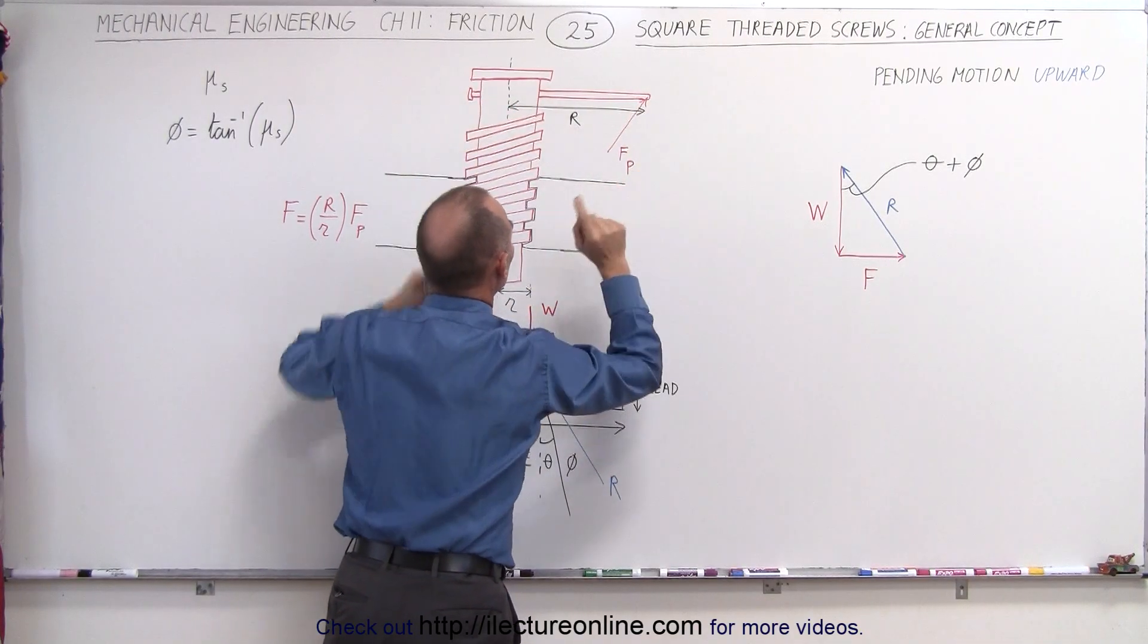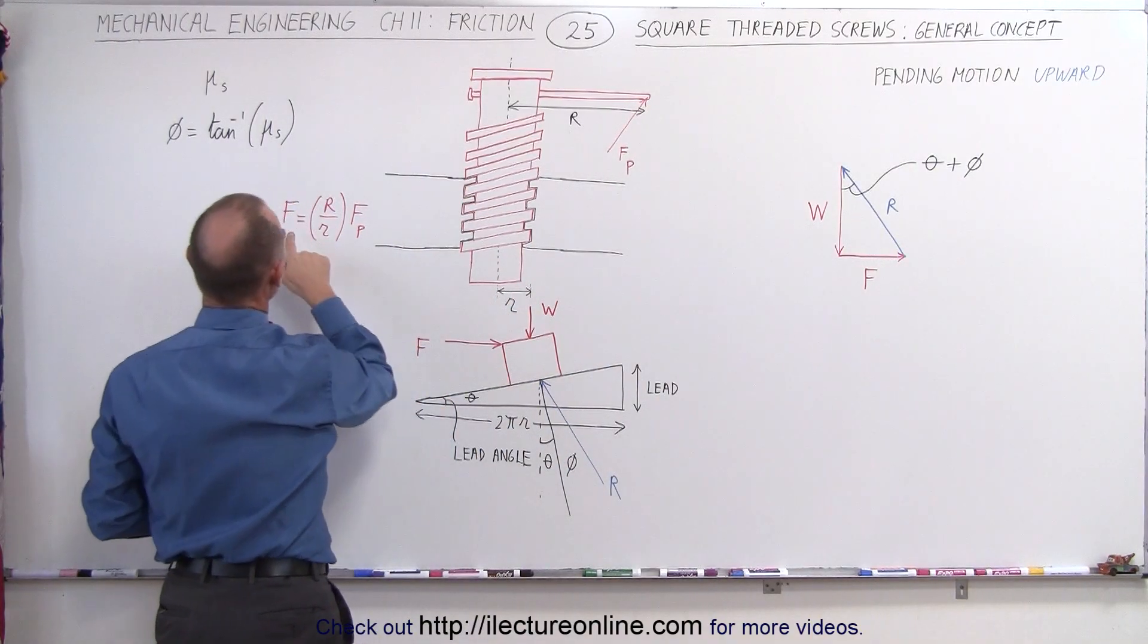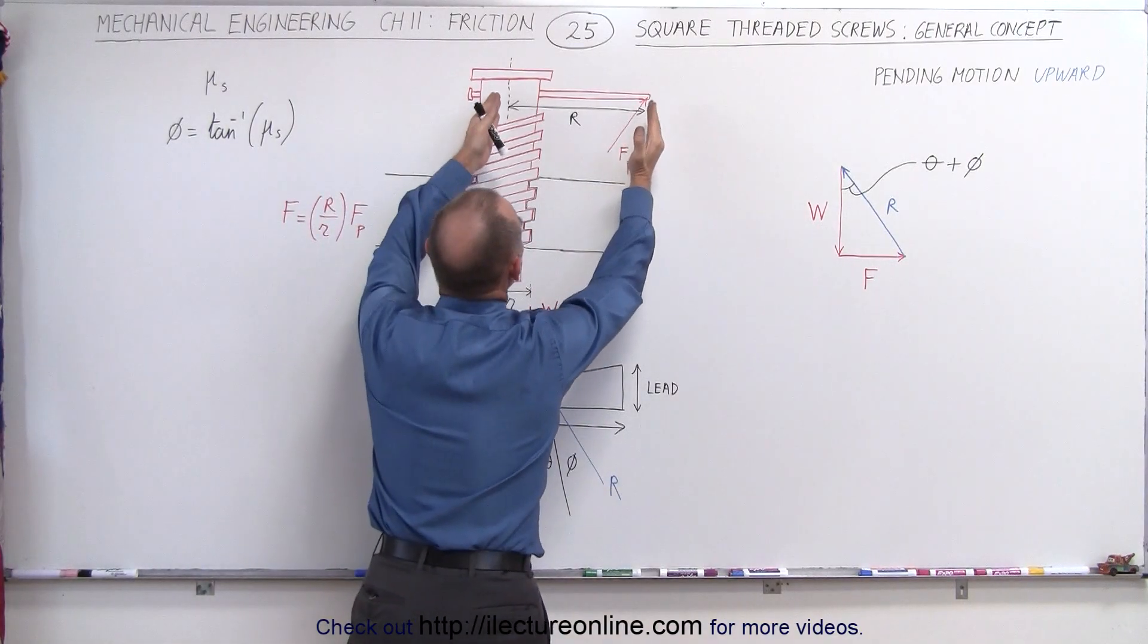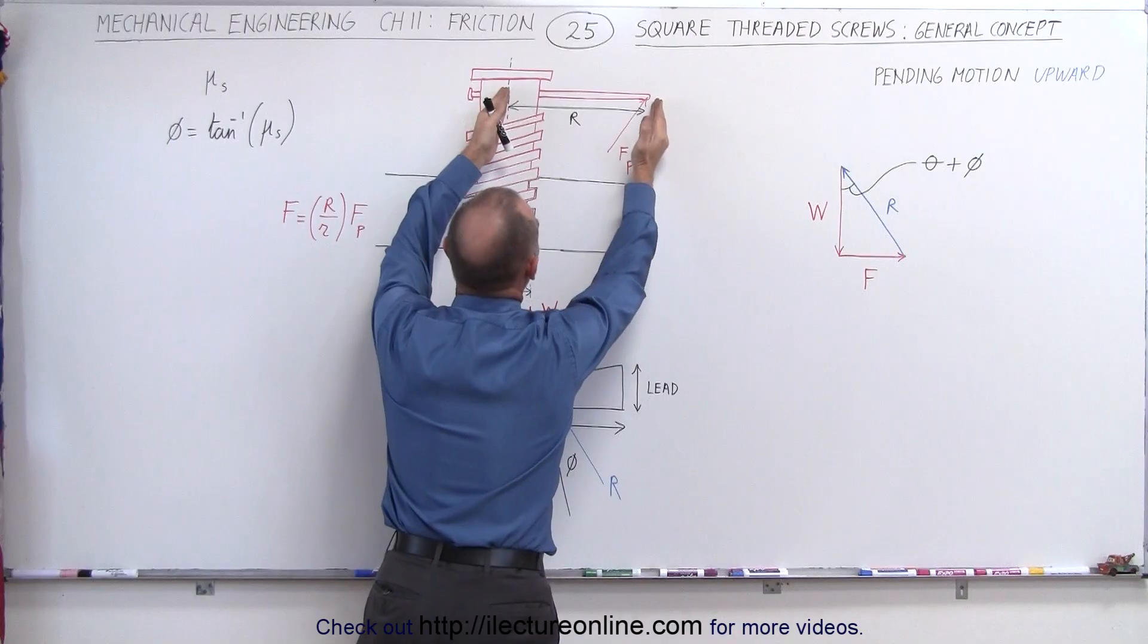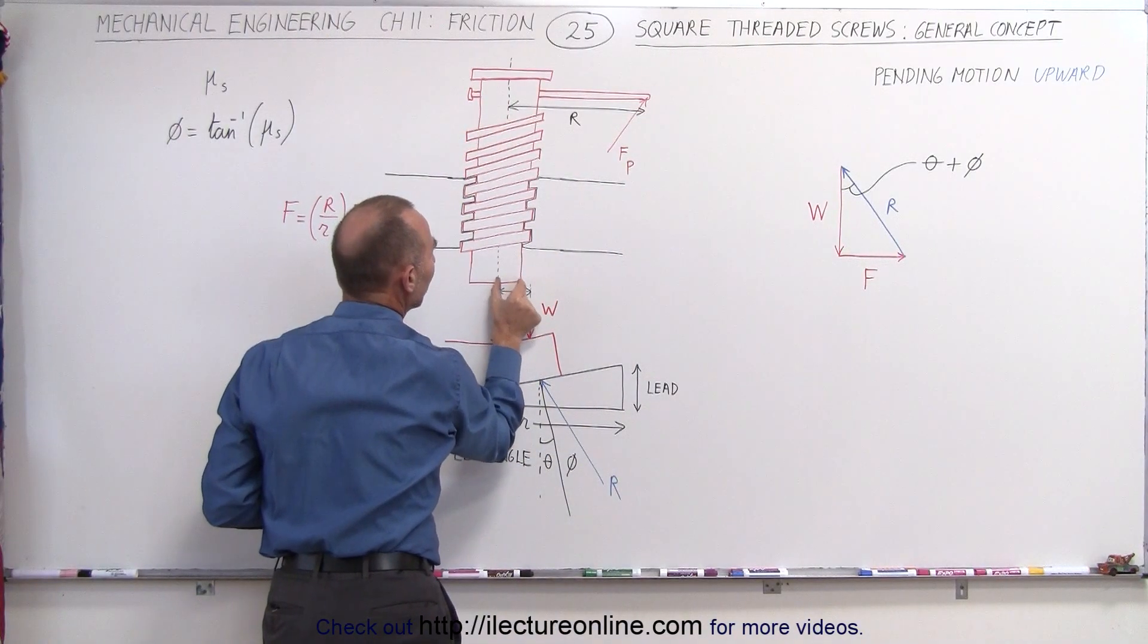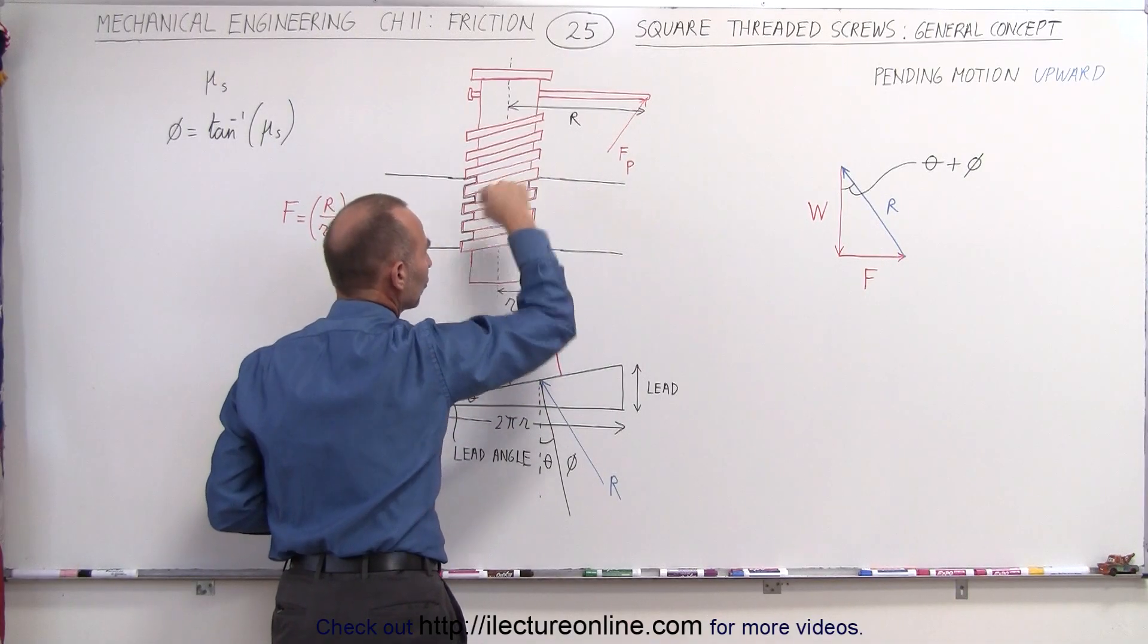Such that the force applied to the thread itself can be found by taking f of p and multiplying times the ratio of the moment arm of the applied force divided by the radius of the screw itself, the mean radius of where the thread touches the object in which it is screwed.